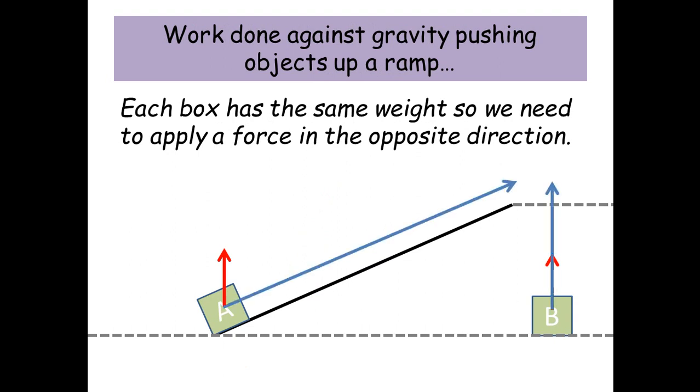Next up let's think about the displacement vectors. So B, the vector for displacement is directly up, whereas for A it's going up the ramp.